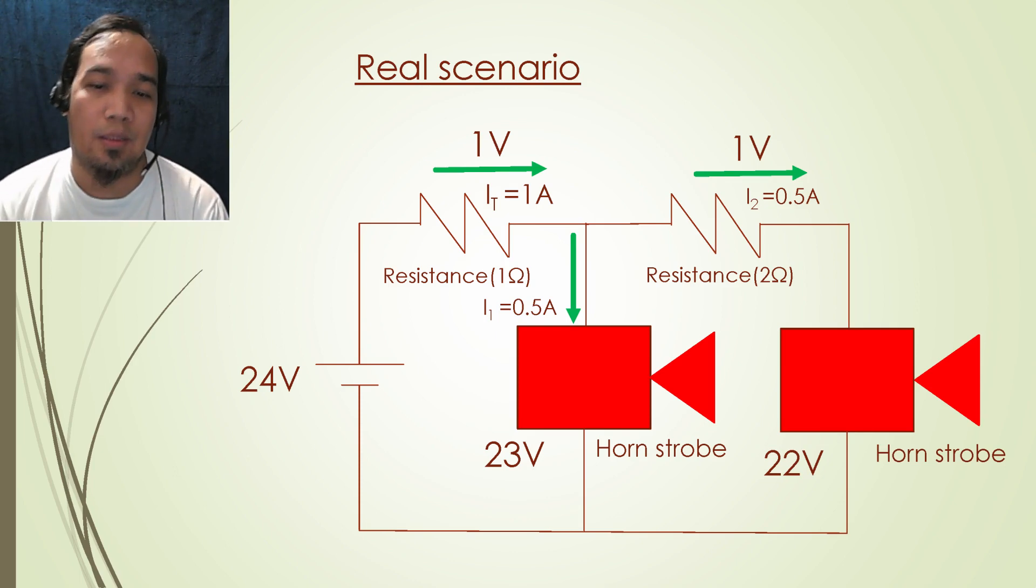You will notice that the voltage received from the first device is reduced to 23 volts due to the voltage drop from the first cable run, and then reduced again from 23 volts to 22 volts received from another device because of the second cable run.